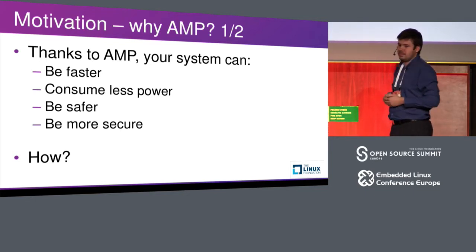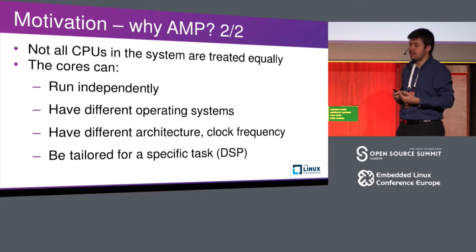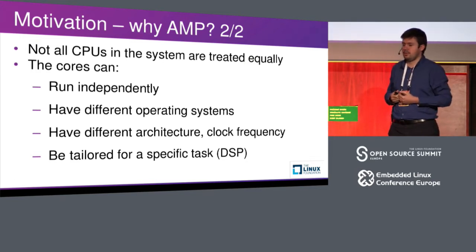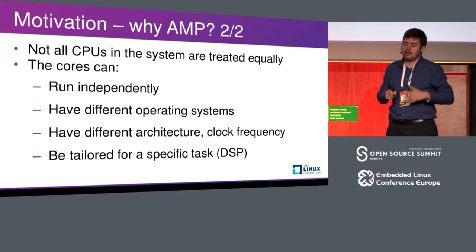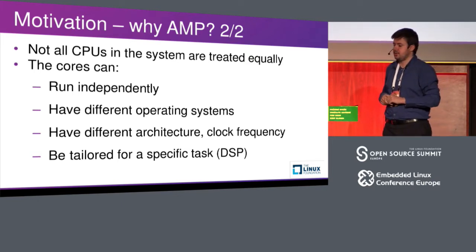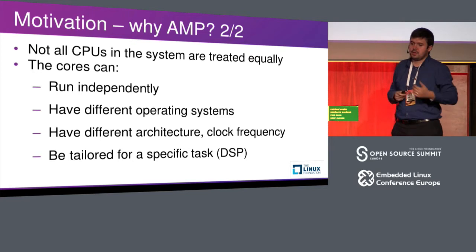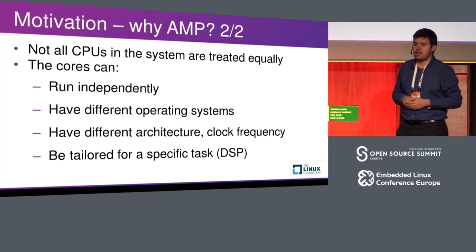This is due to the fact that not all CPUs in the system are treated equally. The cores run completely independently of each other — they are not under the same operating system, they can have different operating systems, different architectures. It can be a dedicated DSP for delegated computation. AMP can also be used in mixed-criticality systems, meaning on one core you can run Linux — which is not certifiable for automotive applications — and on the other core, the so-called AMP core, you can run an RTOS that takes care of critical tasks.